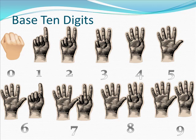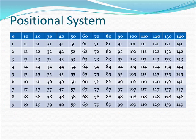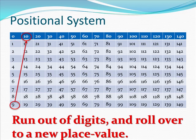In the base 10 number system, we only have 10 symbols, 0 through 9. So if we want to count values larger than 9, we have to start representing them with multiple symbols. So here we've listed all of the numbers from 0 to 149, and we see a pattern emerge. We notice that each time at the bottom of a column when we run out of digits, we have to roll over to a new place value.